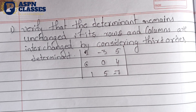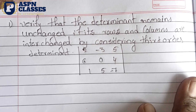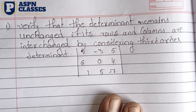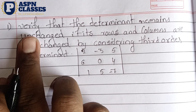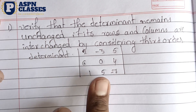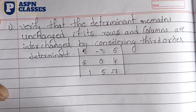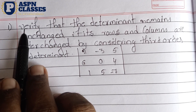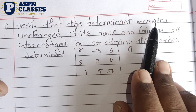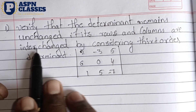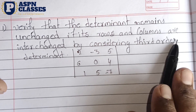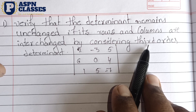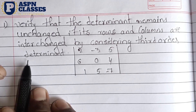We have a discussion about more questions. We have to solve the property. So we have to solve the example of this. We have to verify that the determinant remains unchanged if its rows and columns are interchanged, by considering a 3rd order determinant.